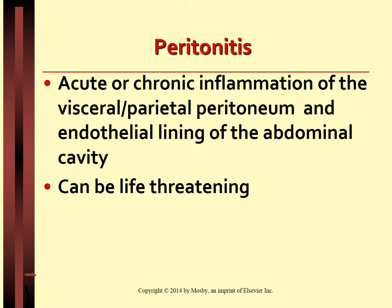Intraperitoneal organs include the stomach, the first 5 cm and the fourth part of the duodenum, jejunum, ileum, cecum, appendix, transverse colon, sigmoid colon, and the upper third of the rectum. Other organs located in the intraperitoneal cavity are the liver, spleen, and the tail of the pancreas.